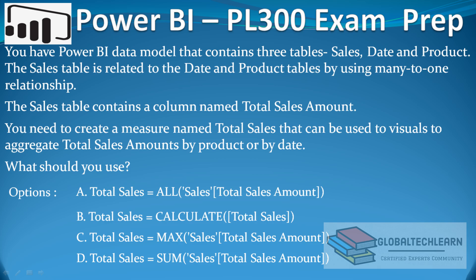I'll also ask you a bonus question from a Power BI exam that you can attempt in the comments. The question: you have a Power BI data model with three tables — sales, date, and product. The sales table is related to date and product using many-to-one relationships and contains a column named total sales amount. You need to create a measure named 'Total Sales' to aggregate total sales amount by product or by date. Which function should you use: ALL, CALCULATE, MAX, or SUM? If you want a practical example, the link is in the description.